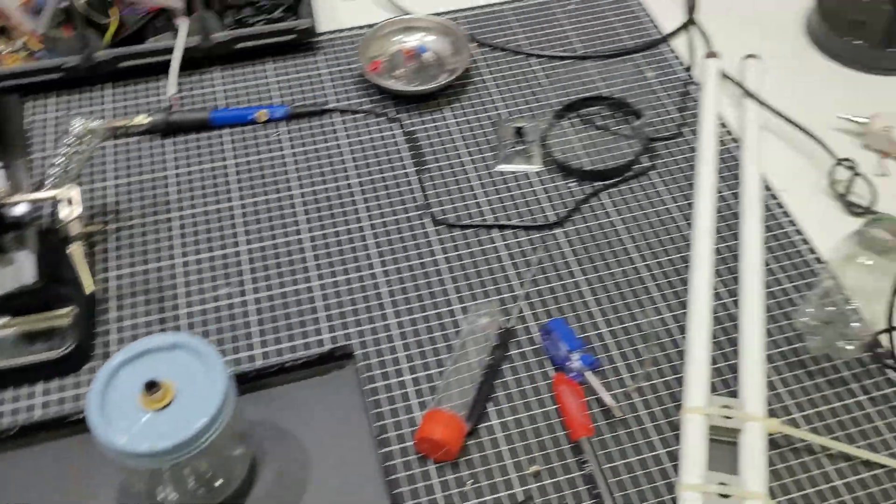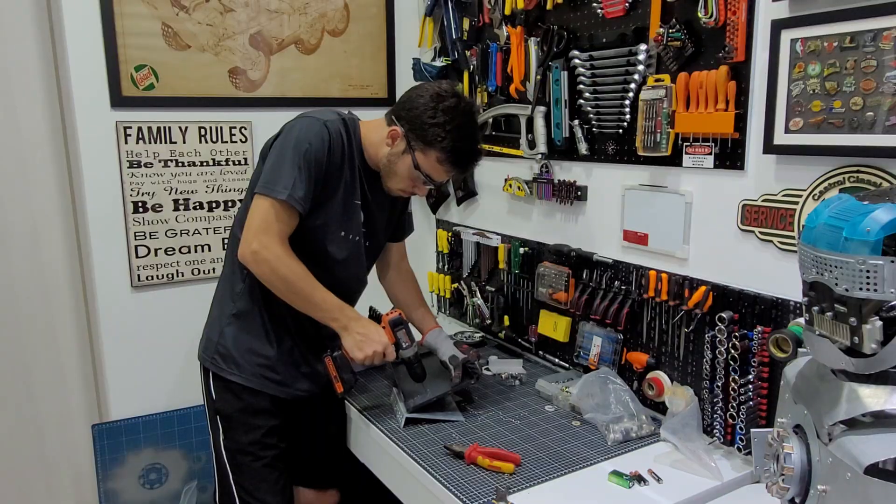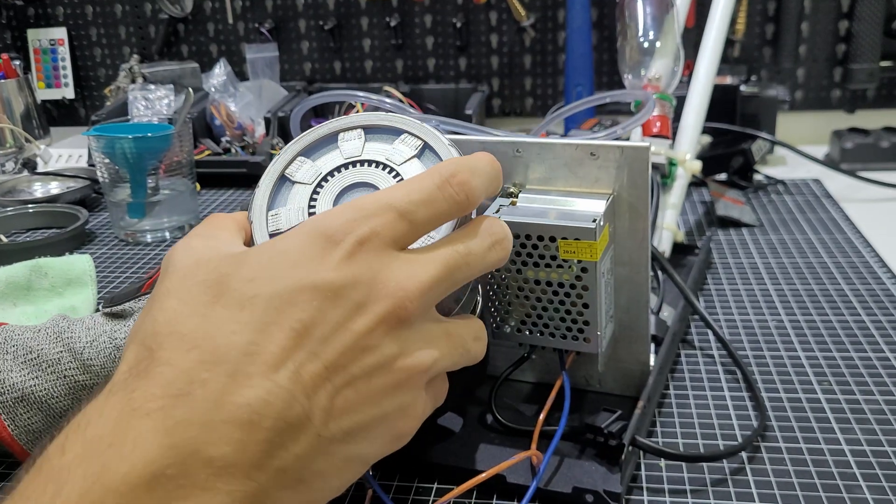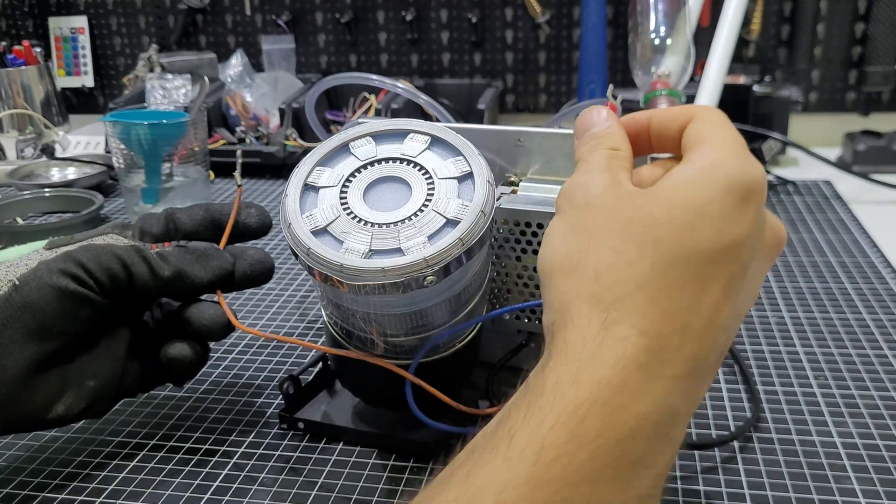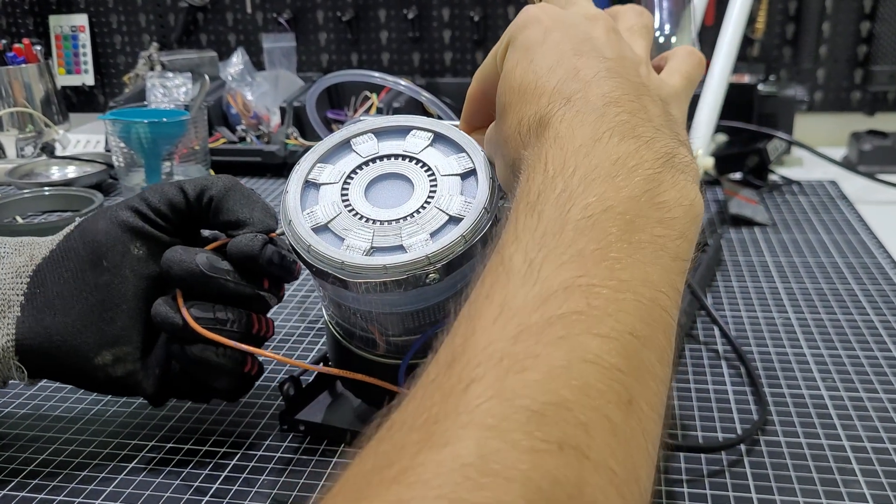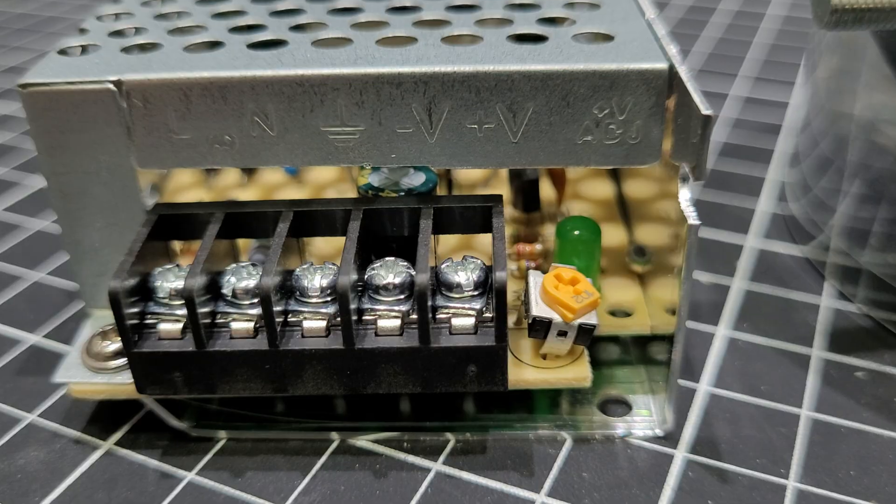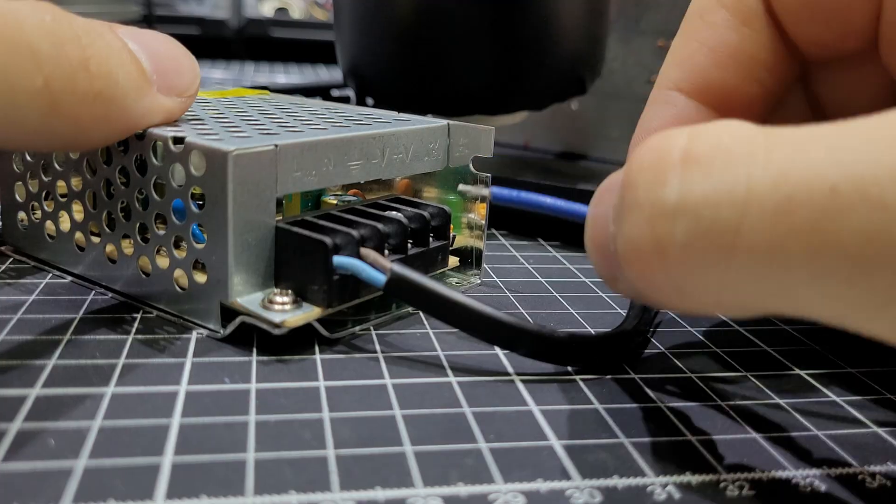In order to test the reactor properly I built a base to hold everything we need. The reactor, the power supply, the filter and of course a mini rocket launcher. Because why not? For electrolysis to work properly we need enough current. So I chose a 12V and 5A power supply. I think it's enough.